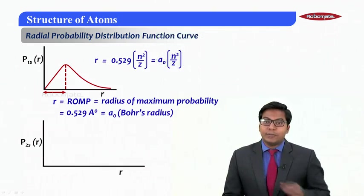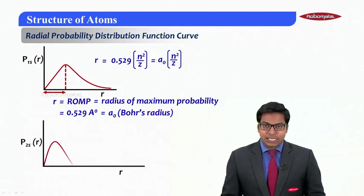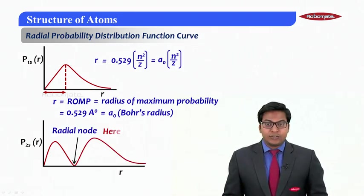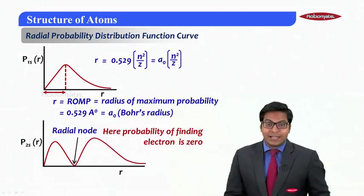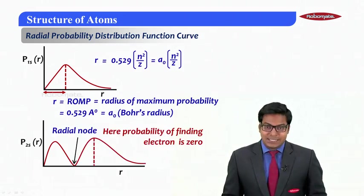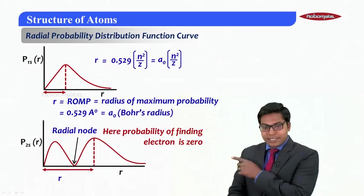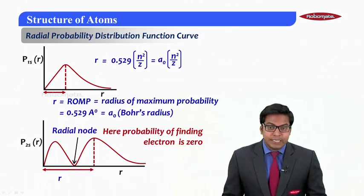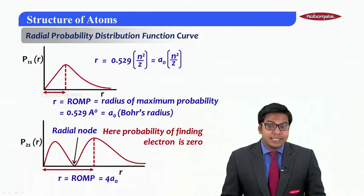For 2s, if I plot probability distribution function versus r, this is the graph you will get. Here what I would see is that we are getting a radial node here where the probability of finding electron is zero.